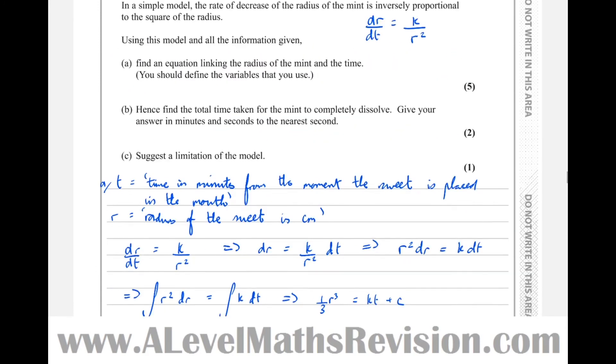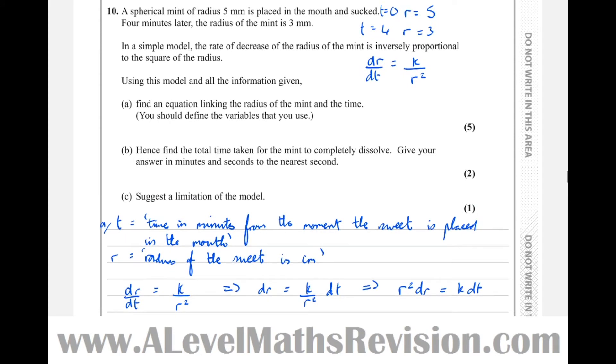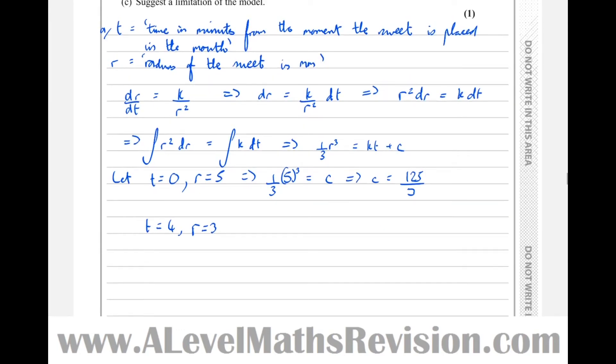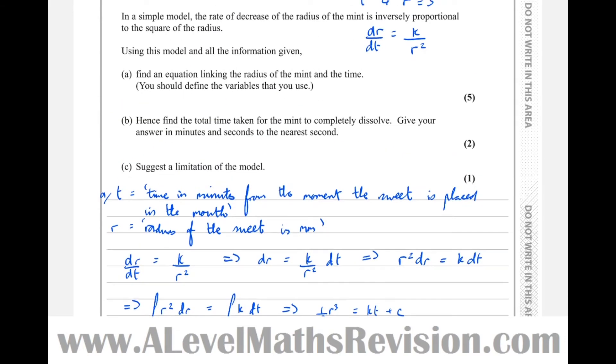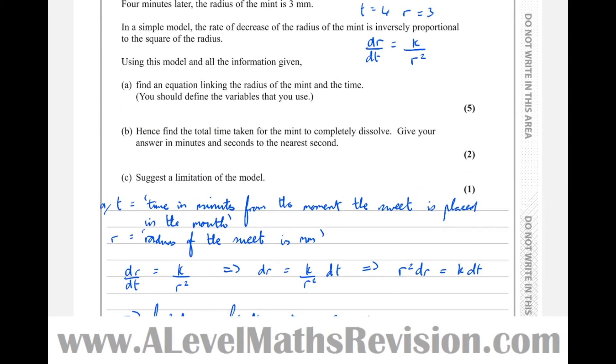And it told us t equals 4 and r equals 3. So I've just noticed a little mistake there as well. I've said the radius of the sweet in centimeters. I should have put millimeters. So that's important. Units are important. Now, normally I would have edited that mistake out and gone from the point where I made the mistake. However, I think it's important to leave that in there and just show you that I'm always checking.